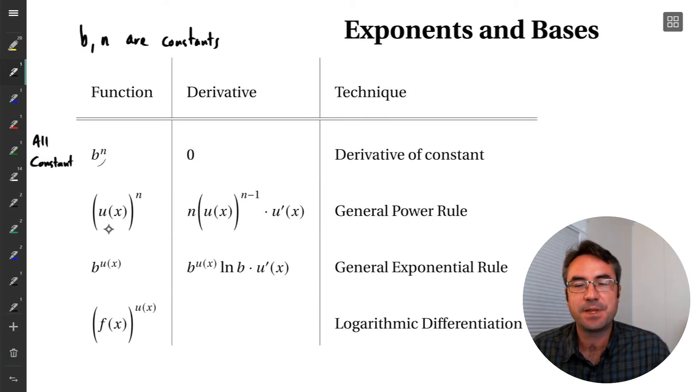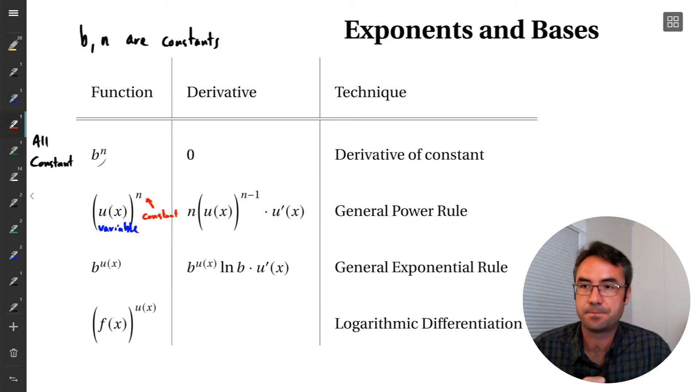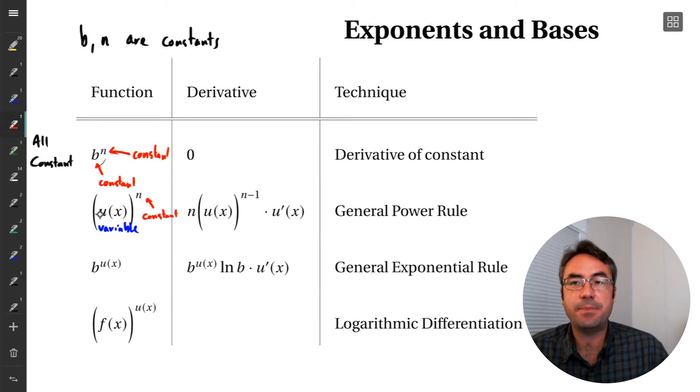The next thing we've seen is where the base term is a variable, but the exponent is a constant. So in this first one, everything was a constant. The base term was a constant and the exponent was a constant. So if everything's constant, derivative is zero. Now, if the base term has some x's, has some variables in it, and our exponent is just a constant, well, we know how to differentiate that. That's just the general power rule.